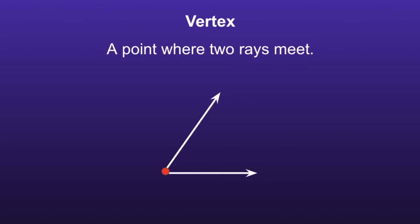Since we're going to start looking at angles now, it's going to be important for us to know what a vertex is. A vertex is a point where two rays meet. If you look at the angle below, that red dot, or the spot where the two rays meet, would be called a vertex.